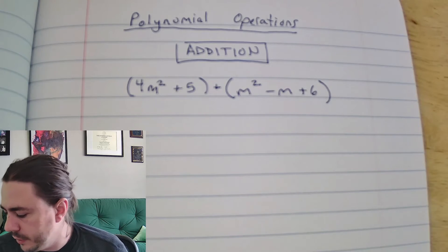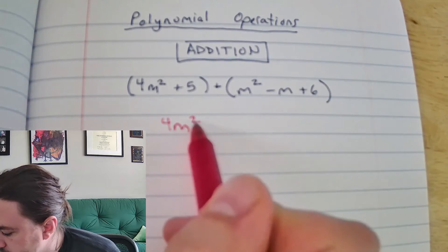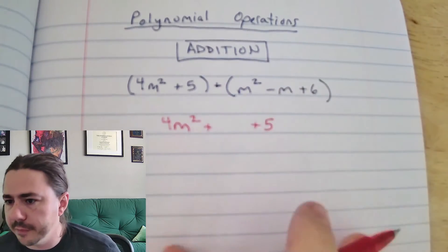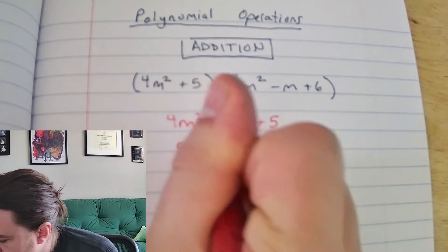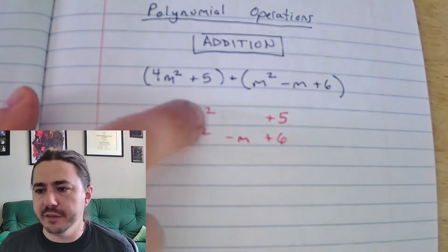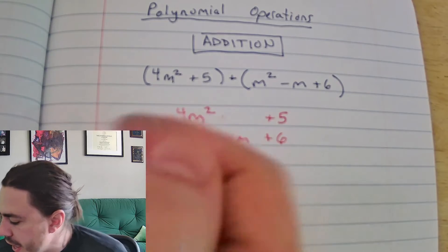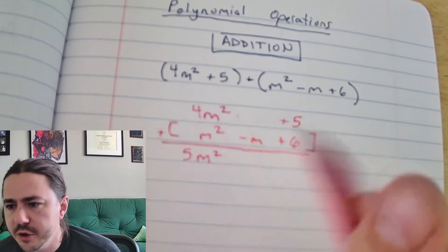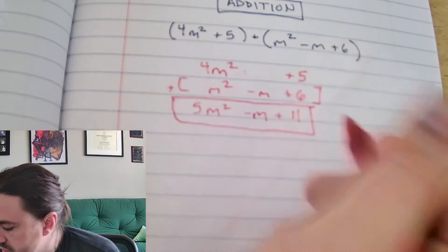I like to line up the like terms and add columns. I'm going to rewrite this — I'll write 4m squared (that's a quadratic term, degree 2), then leave a little space since we don't have a linear term, then plus 5. And underneath I'll write m squared minus m plus 6. Adding these columns: 4m squared plus m squared is 5m squared. Then 0 plus negative m is negative m. Then 5 plus 6 is 11. So the sum of those two polynomials is 5m squared minus m plus 11.